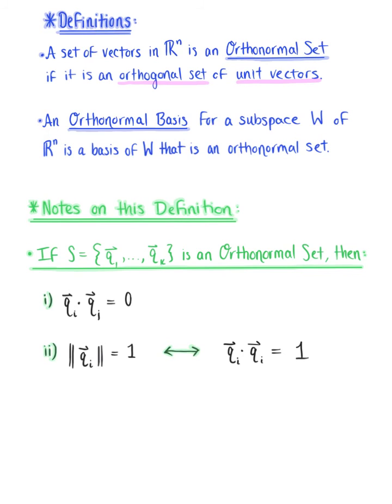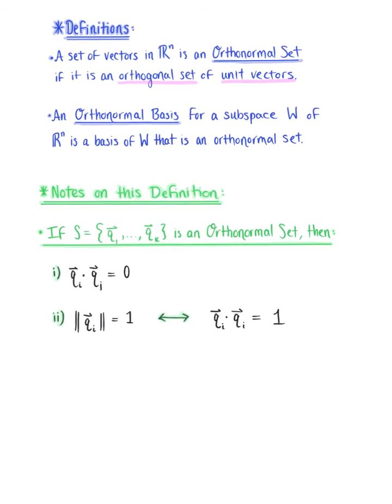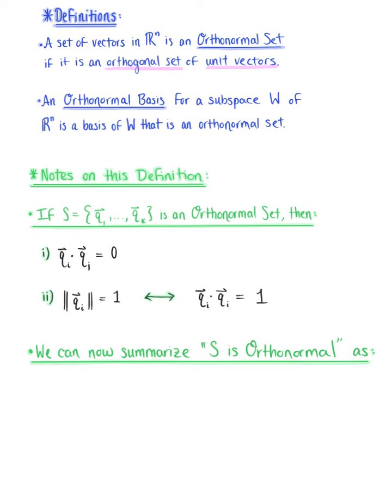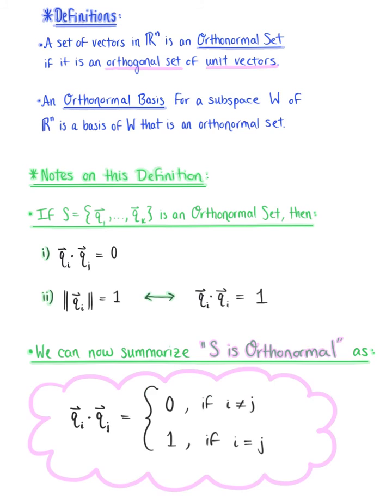Now with this last observation, we can go ahead and summarize the statement S is orthonormal with the following inequality. So we can say that the dot product of vector q sub i with vector q sub j is equal to zero if i does not equal j, and the dot product is equal to one if i equals j.